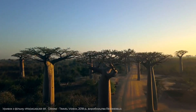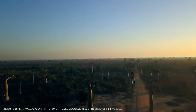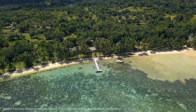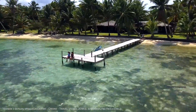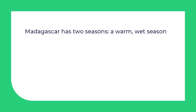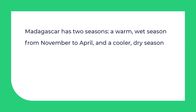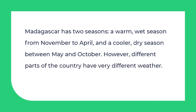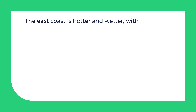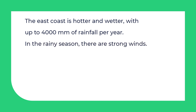Let's read the letter from Sam and find out what the climate is like in Madagascar. Madagascar has two seasons: a warm, wet season from November to April and a cooler, dry season between May and October. However, different parts of the country have very different weather. The east coast is hotter and wetter, with up to 4000 mm of rainfall per year. In the rainy season, there are strong winds.